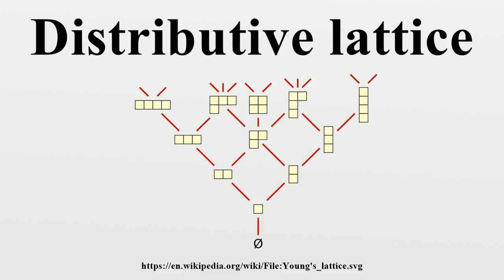More information on the relationship of this condition to other distributivity conditions of order theory can be found in the article on distributivity. A morphism of distributive lattices is just a lattice homomorphism, as given in the article on lattices — a function that is compatible with the two lattice operations. Because such a morphism of lattices preserves the lattice structure, it will consequently also preserve the distributivity.